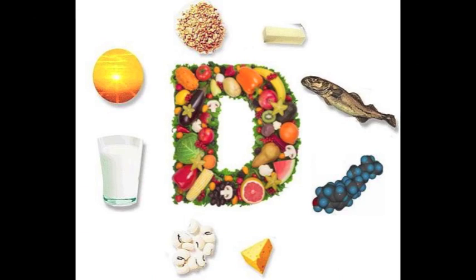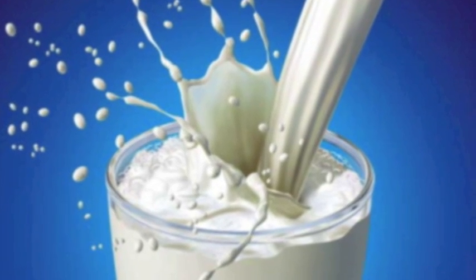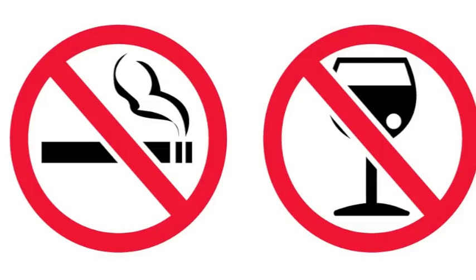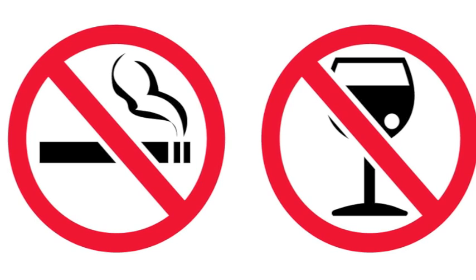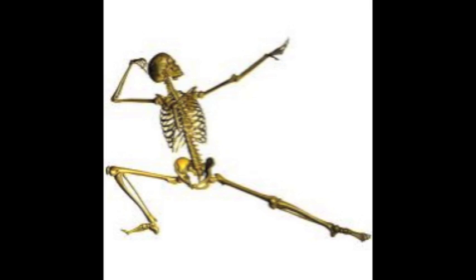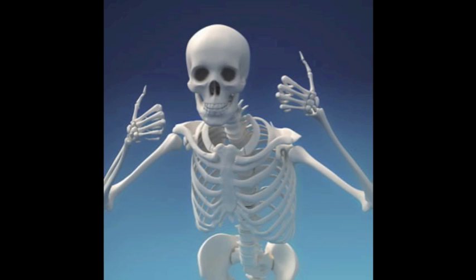Preventing osteoporosis should begin earlier rather than later in life, as your body stops building bone mass sometime in your 30s. Ample vitamin D and calcium are essential in maintaining strong bones, and weight-bearing exercises will increase your bone mass. Refraining from smoking and from consuming excessive amounts of alcohol and caffeine, and adding soy to your diet, are additional ways to decrease your chances of developing osteoporosis. On the other hand, there are no known methods of preventing Paget's disease or osteogenesis imperfecta.